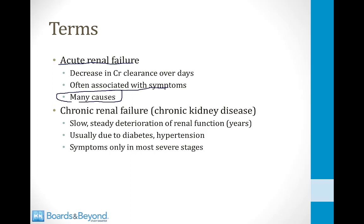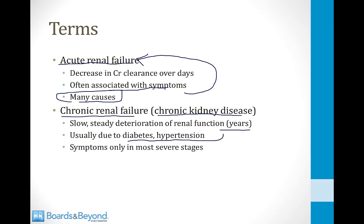Acute renal failure is often seen in hospitalized patients. Chronic renal failure, now often called CKD, is a slow, steady deterioration in renal function that usually occurs over years. In the United States, this is almost always due to diabetes and hypertension. Patients with chronic renal failure often don't develop symptoms until the most severe end stages.